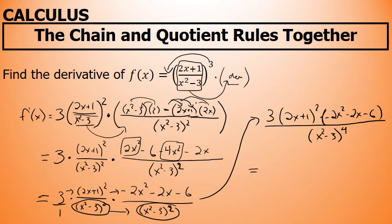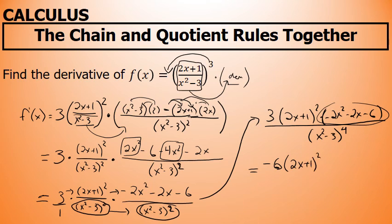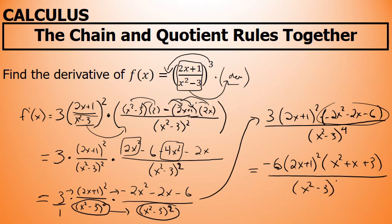Before I call this my final answer, I'm going to factor out negative 2 from negative 2x squared minus 2x minus 6. After factoring out negative 2, it will be multiplied by the 3 that was already there. My final answer is negative 6 times 2x plus 1 squared, times x squared plus x plus 3, all over x squared minus 3 to the fourth power.